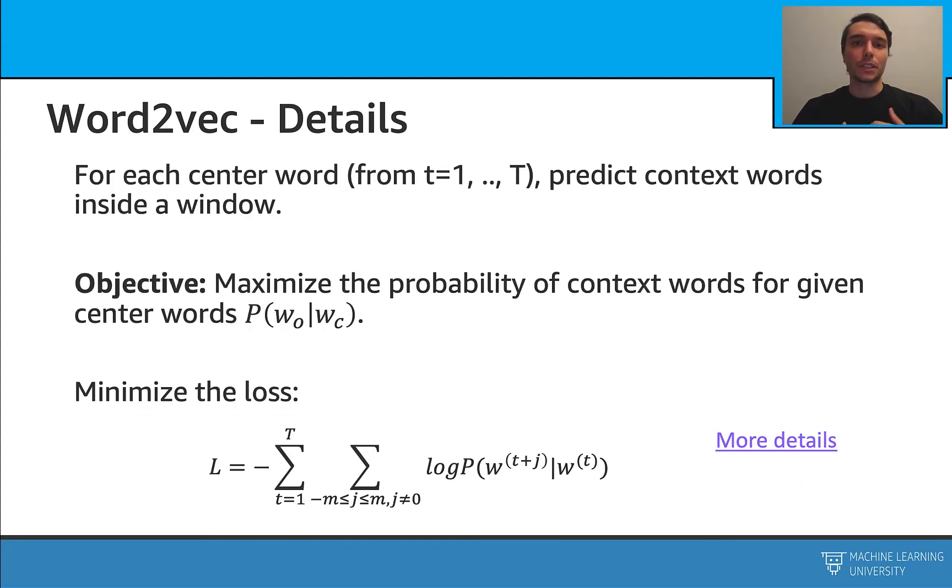So in word2vec, we are trying to correctly predict all these context words for all the center words. So if you try to put this into an objective, we are trying to maximize the probability of doing that. There are many more details to the implementation of this, so you can check out the link for that. But we can write this down as a likelihood, and from that we can get a loss function. And we can try to train a machine learning model with a corpus and try to minimize the loss function. As I said before, all details are provided in this link.